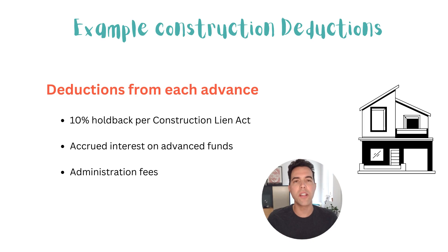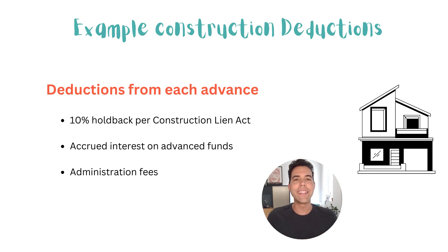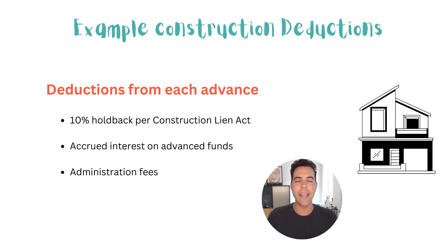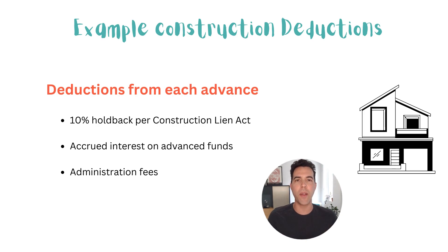Each draw under a construction loan has deductions from it. The most important and non-negotiable one is that 10% of each draw will be held back due to the Construction Liens Act — I'll be doing a separate video on this topic. The other key deduction is the accrued interest on any monies already advanced. Very often lenders will deduct prepaid interest for a 30 to 60 day period directly from the advance.